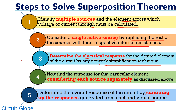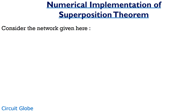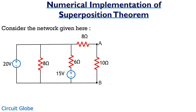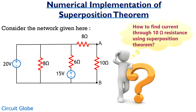Let's take an example for a better understanding. Consider the circuit shown here. Suppose we have to find the current flowing through the 10-ohm resistance using superposition theorem. This circuit has two sources: one of 20 volts and another of 15 volts, so we will consider each source separately to find the current through branch AB.